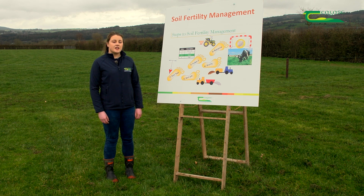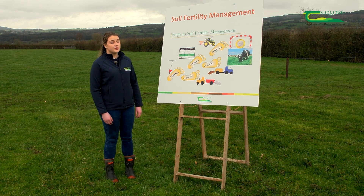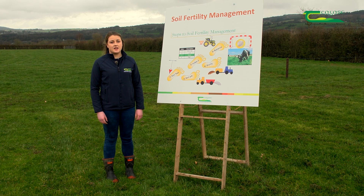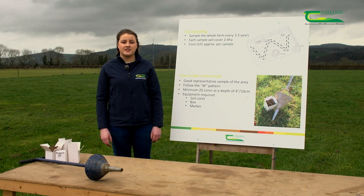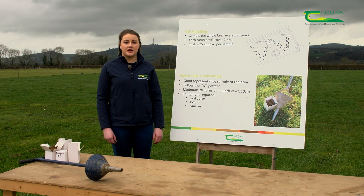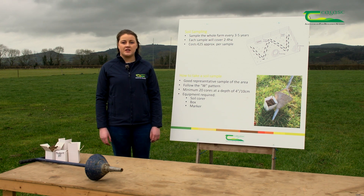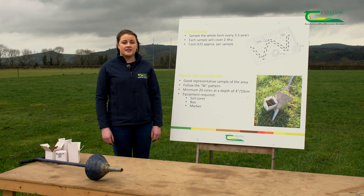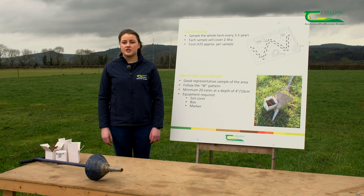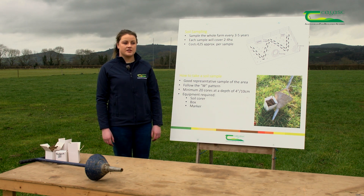Today, along with my colleague Brian, we're going to go through the five steps to improving soil fertility on farm and good management of soil fertility. A correctly taken soil sample is key to getting a picture of your pH, P, K, and lime status on your farm. A soil sample for the whole farm should be taken every three to five years, and the soil sample area should be no bigger than four hectares.